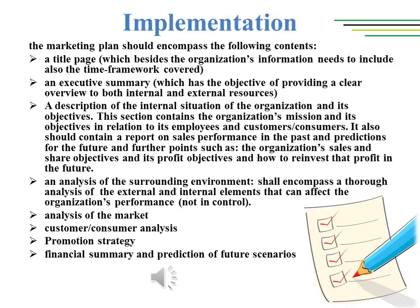To give a deep insight of a marketing plan, it's useful to briefly describe the contents of the plan, which encompasses: 1. A title page, which besides the organization's information needs to include also the time framework covered. 2. An executive summary, which has the objective of providing a clear overview to both internal and external resources. 3. A description of the internal situation of the organization and its objectives. This section contains the organization's mission and its objectives in relation to its employees, customers, and consumers. It should also contain a report on sales performance in the past and predictions for the future, so as to outline possible threats and hurdles and strategies to tackle them. This section should also encompass further focal points such as the organization's sales objectives, market share objectives, profit objectives, and how to reinvest the profit in the future.